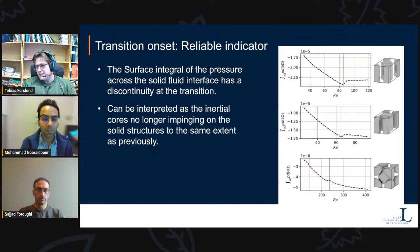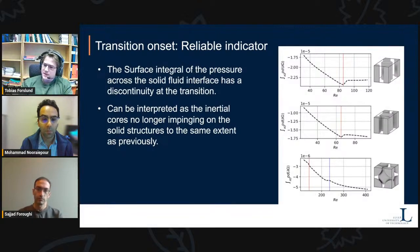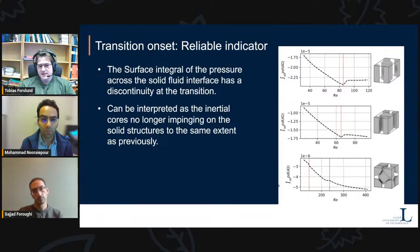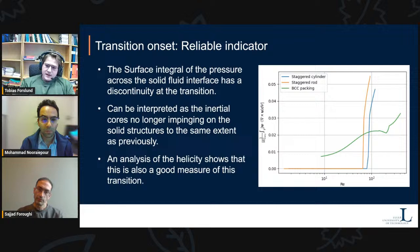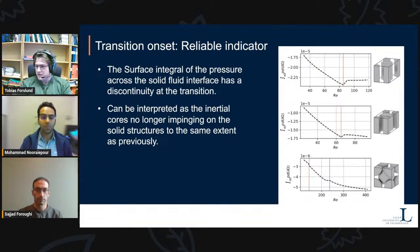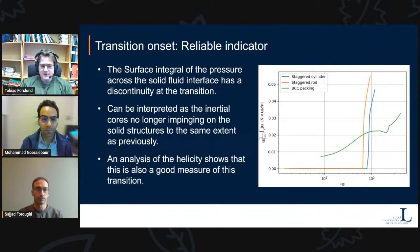A reliable indicator for this transition turned out to be the surface integral of pressure across the solid-fluid interface. As viscosity decreases, the inertial cores tend not to impinge on solid surfaces — they search for alternative flow paths around them. This directly changes the value of this integral as the transition occurs. It can be interpreted as the inertial cores no longer impinging on solid structures. Further analysis also shows that helicity — a measure of the topological complexity of the flow — is strongly related to this transition. Though helicity is not directly observable in an experiment, it turned out to be a better indicator of the transition than the pressure integral.